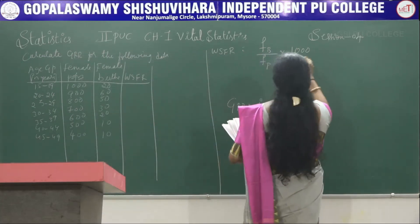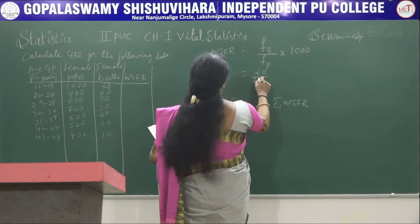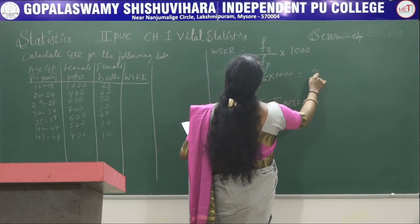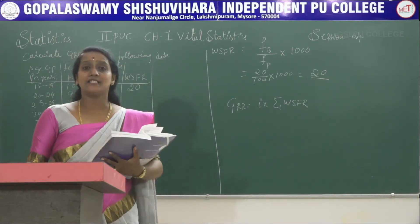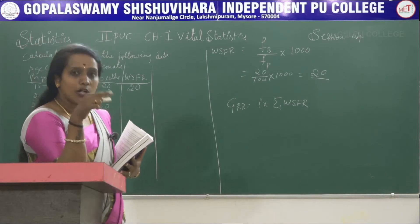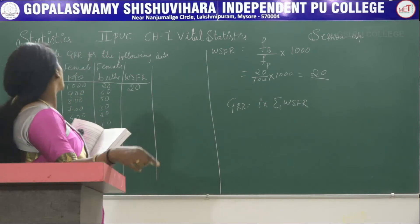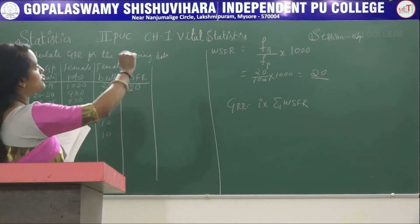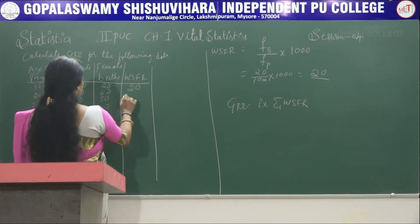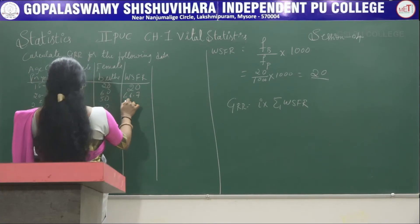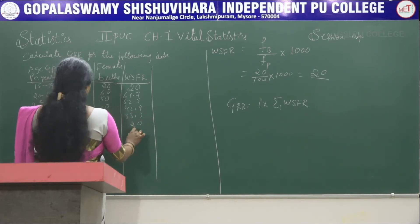I will show the WSFR calculation for age group 15 to 19: it is 20 divided by 1000 into 1000, so the value is 20. Similarly, calculating WSFR for all age groups in the same method, the remaining WSFR values are: 66.7, 62.5, 42.9, 33.3, 20, and 25.